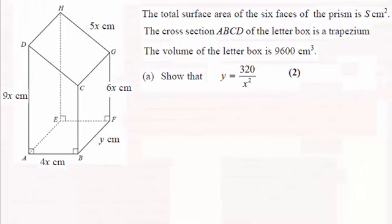Hi there, now for this question we're given this solid here and we're told that the cross section is the trapezium ABCD, and we've got to show that y equals 320 over x squared, given that the volume of the letterbox is 9600 centimeter cubes.